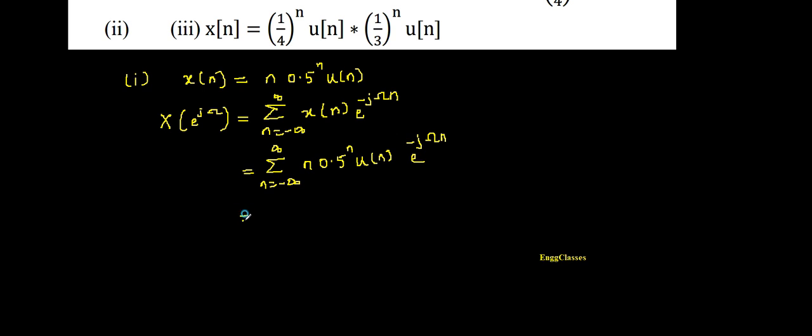...the limits of this summation with respect to the given numerical. As the given numerical has the term u[n], which is a unit step signal that exists from zero till infinity, the lower limit becomes zero and upper limit remains as infinity.